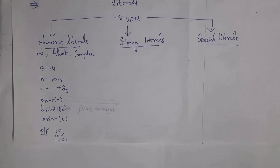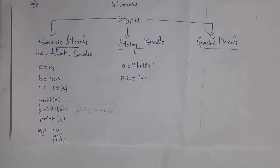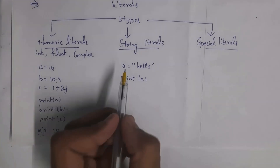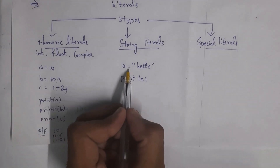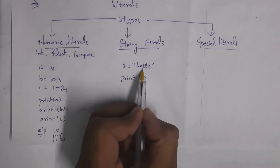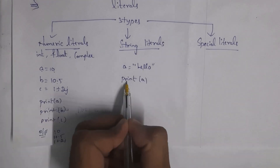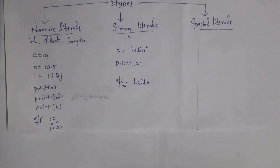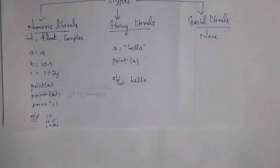Next, string literals. For example, a = 'Hello' where 'Hello' is a string. Strings must be represented in either single or double quotations. When you write print(a) you will get output 'Hello'.